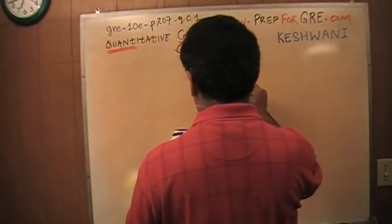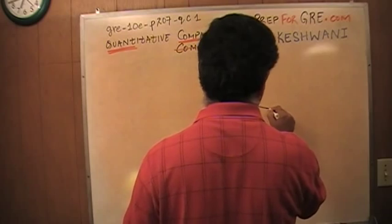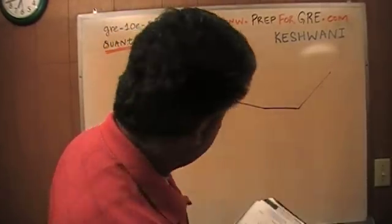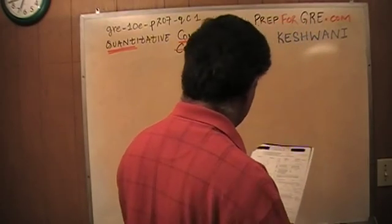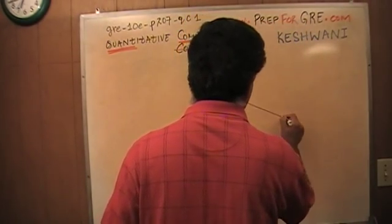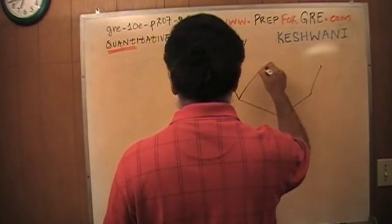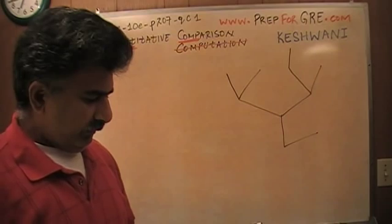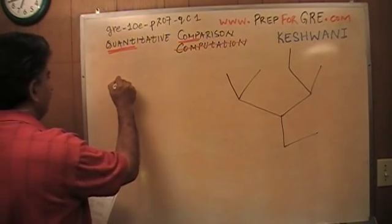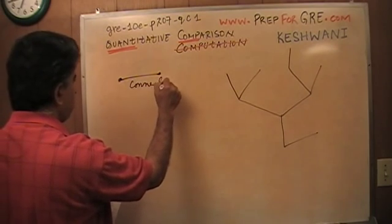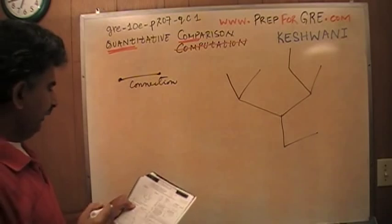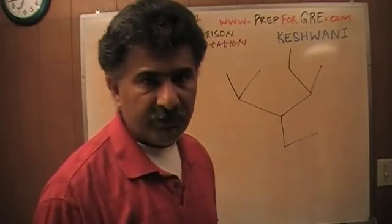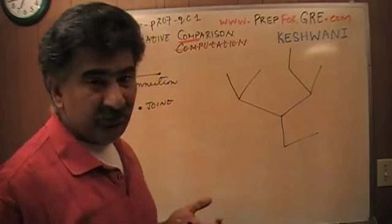They give you a little picture here. There are four segments — one, two, three, four — and they are defining this notation as a connection and this dot as a joint. Typically they want you to compare how many joints there are versus how many connections there are. Well, you don't really have to do anything at all.